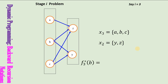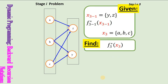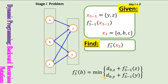What could be the relation between f3 star and f2 star? F3 star of b is the shortest path from the end node to node b, which will be either the shortest path from the end node to node z plus the distance from b to z, or the shortest path from the end node to node y plus d(b,y). Therefore, f3 star(b) can be written accordingly. To summarize, stage 3 problem: given x3 and x2 and the information of f2 star, find f3 star.